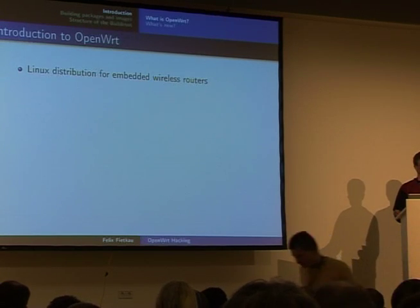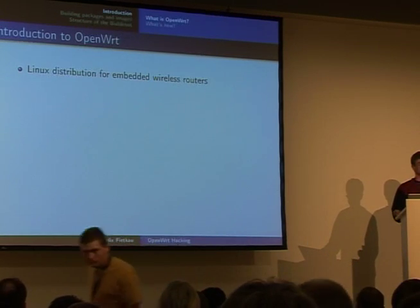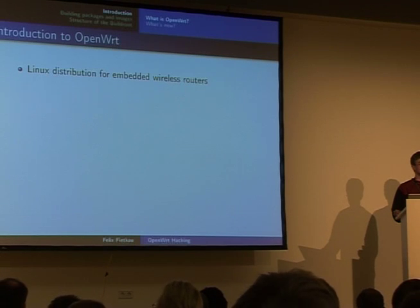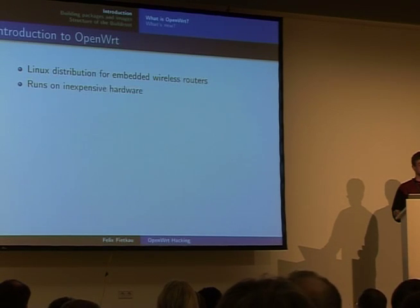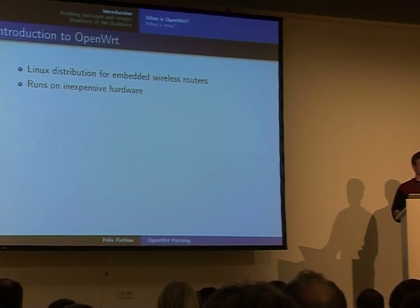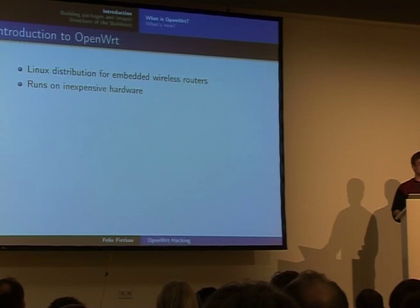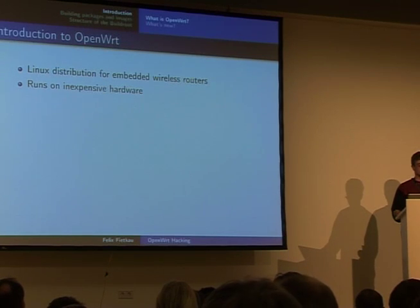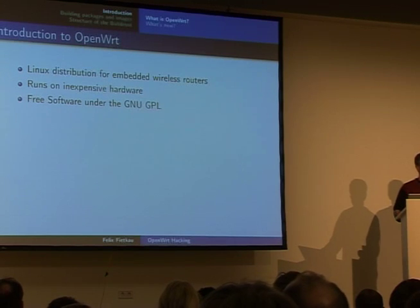Let's start with what OpenWRT is. It is a Linux distribution for embedded wireless routers, designed to run on inexpensive hardware, so it can live with the space and RAM constraints of the average wireless router you can buy on the market today. And of course, it is free software under the terms of the GNU General Public License.